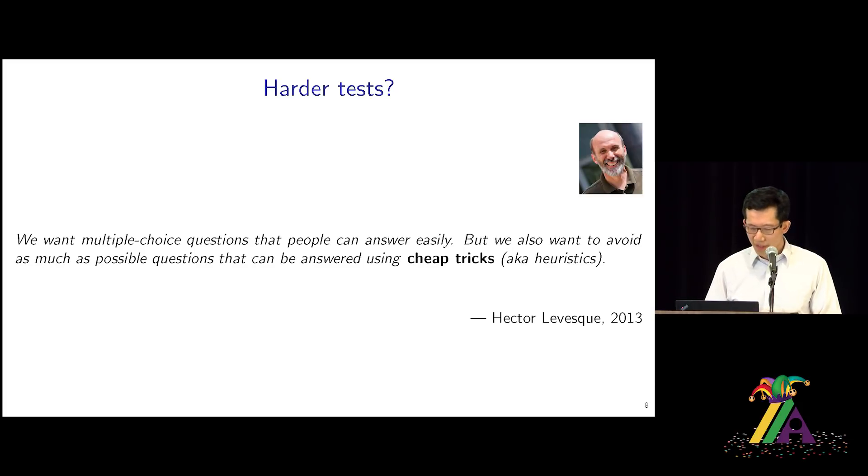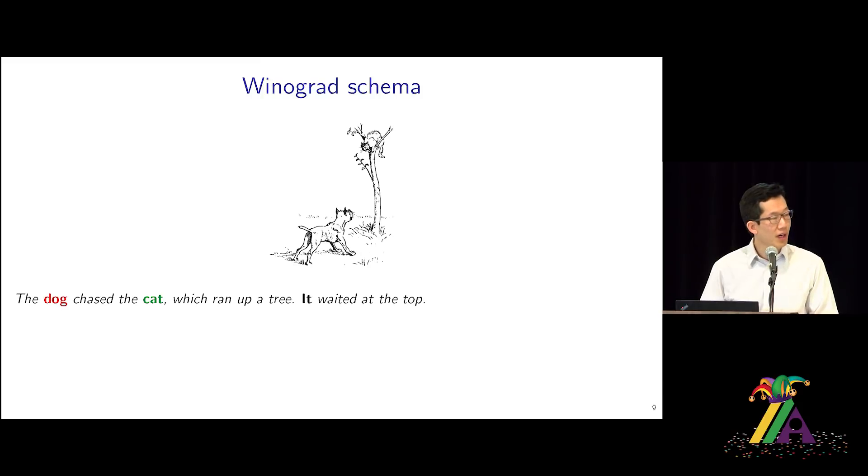So, one idea is to take a page from Hector Levesque's book, who wrote this eloquent article in 2013 on our best behavior, which suggests that we really need to stress test our systems. We need to design tests which cannot be simply passed by using cheap tricks. So, he proposed the following Winograd schema, which has gotten a lot of attention. So, here the idea is that you have a sentence, the dog chased the cat, which ran up a tree. It waited at the top, and the goal is to figure out, does it refer to the dog or the cat? So, in this case, it should be the cat. And what about if you have it waited at the bottom? Then it should be the dog.